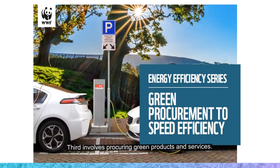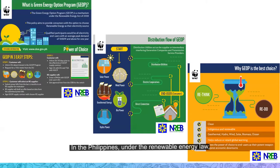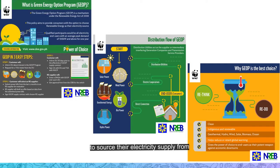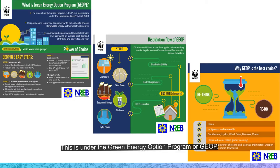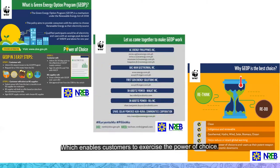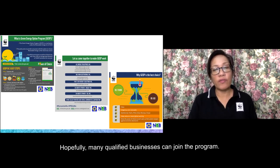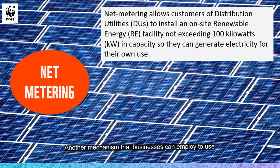Third involves procuring green products and services. In the Philippines, under the renewable energy law, there is a voluntary policy mechanism that allows electricity end users with an average peak demand of 100 kilowatts and above to source their electricity supply from renewable energy sources. This is under the Green Energy Option Program, or GEOP, which enables customers to exercise the power of choice. This has been recently launched by the DOE, with six renewable energy suppliers already given permits.